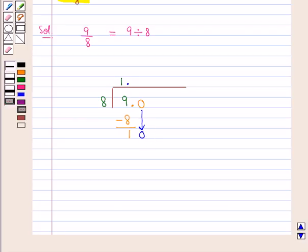So now our new dividend is 10 and the divisor is 8. 8, 1 times is 8 and we write 8 below 10 and we subtract this 8 from 10 to get 2.